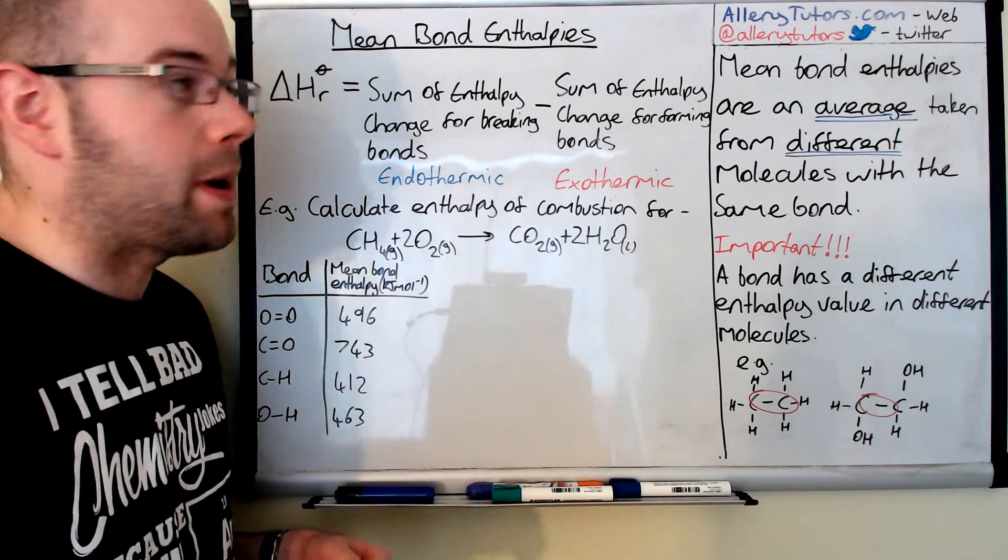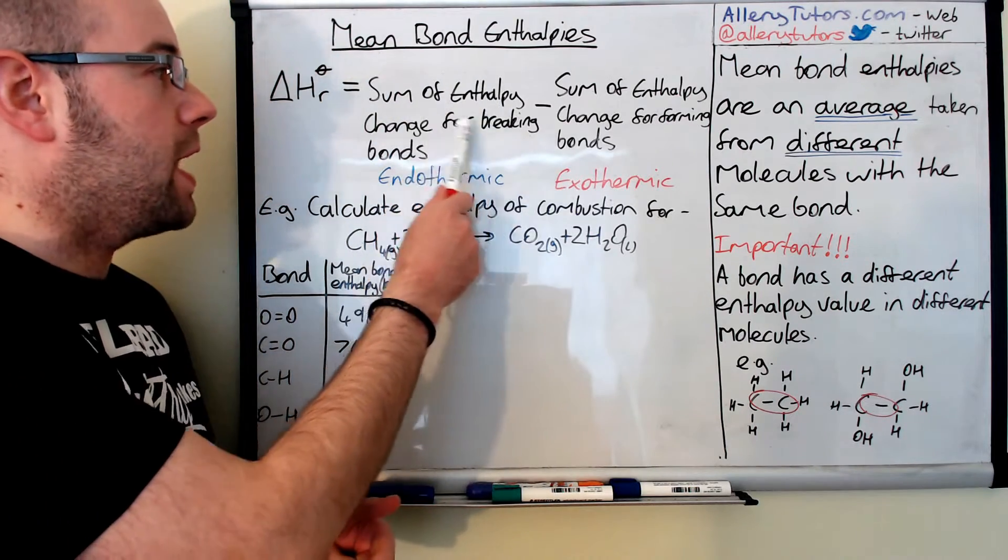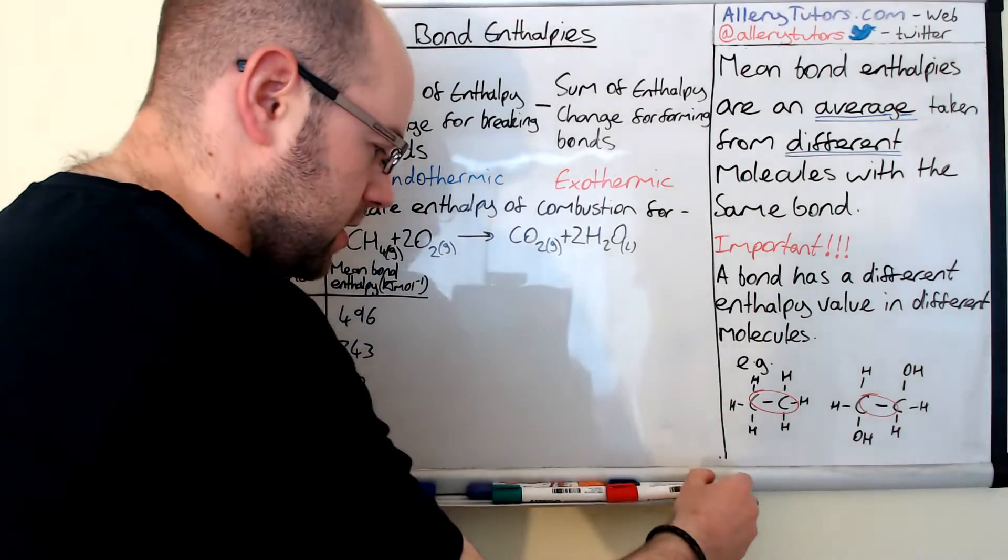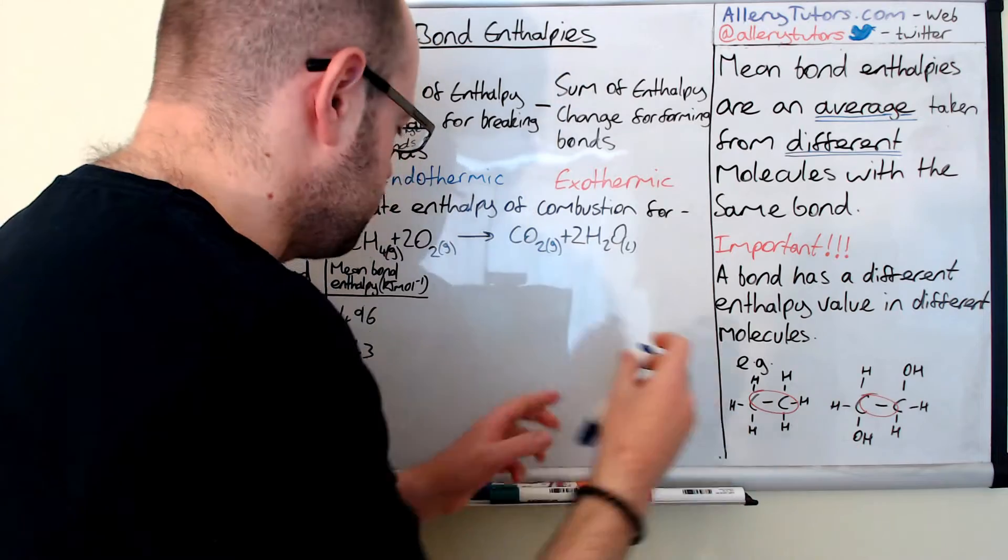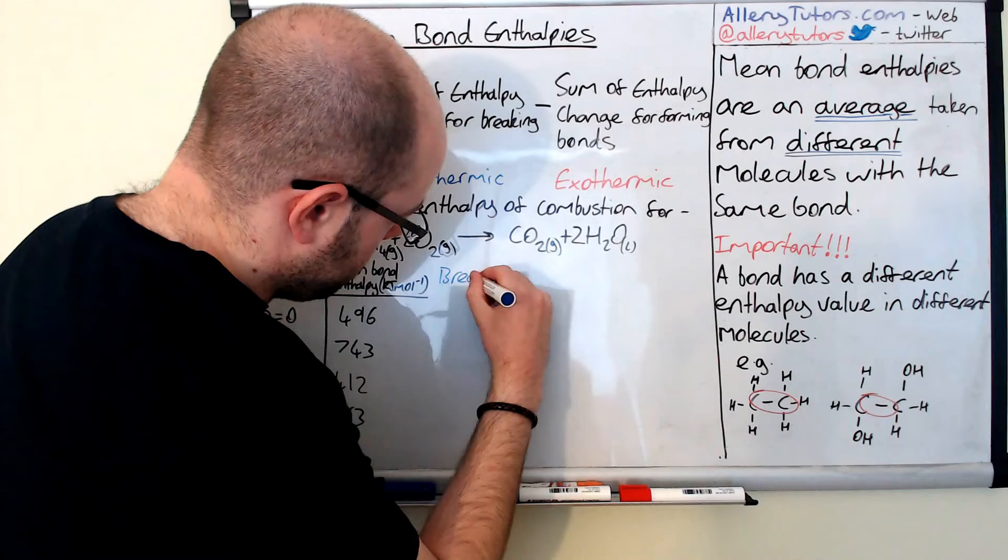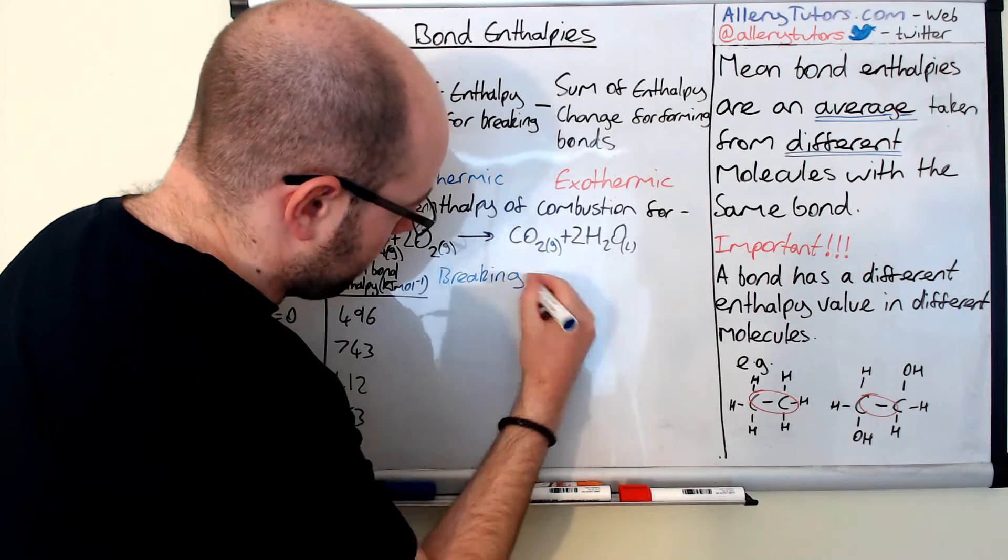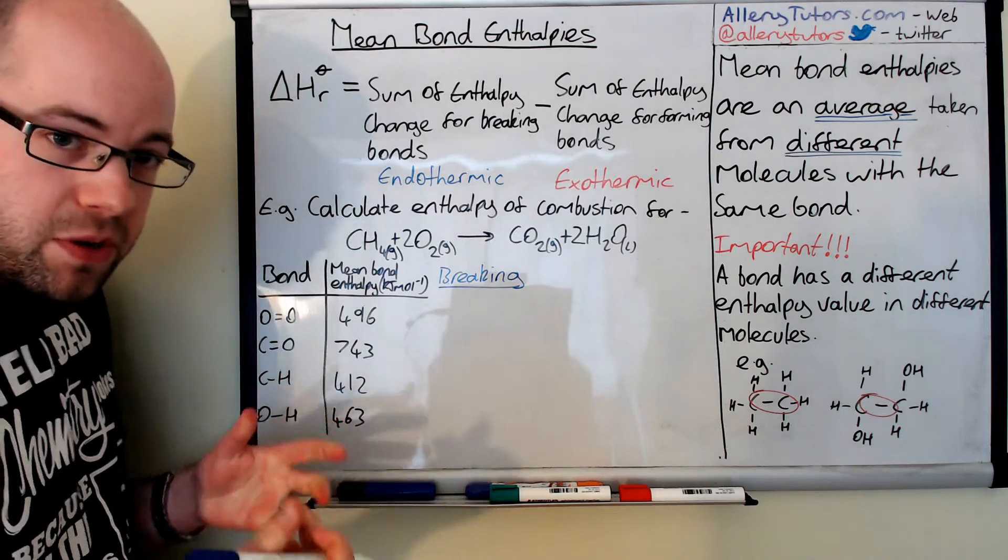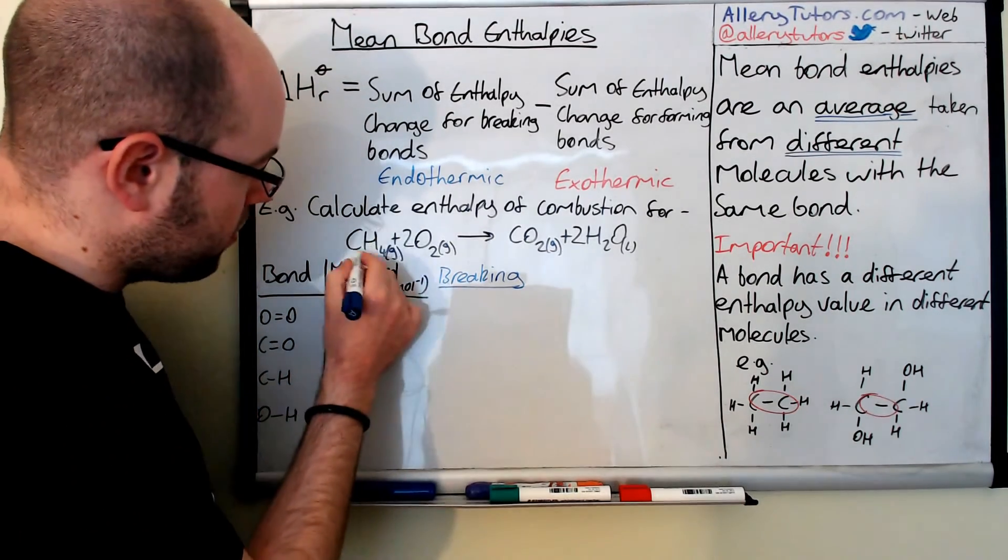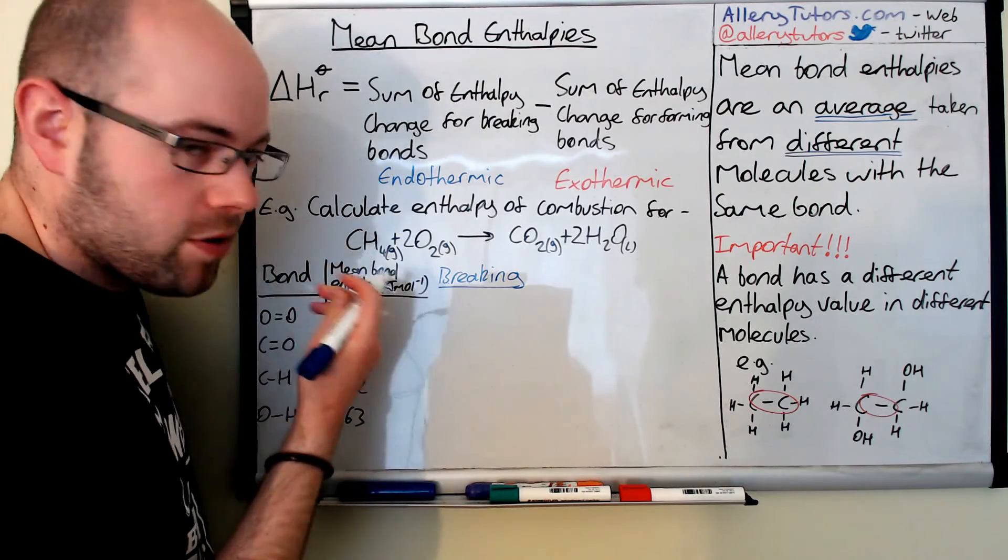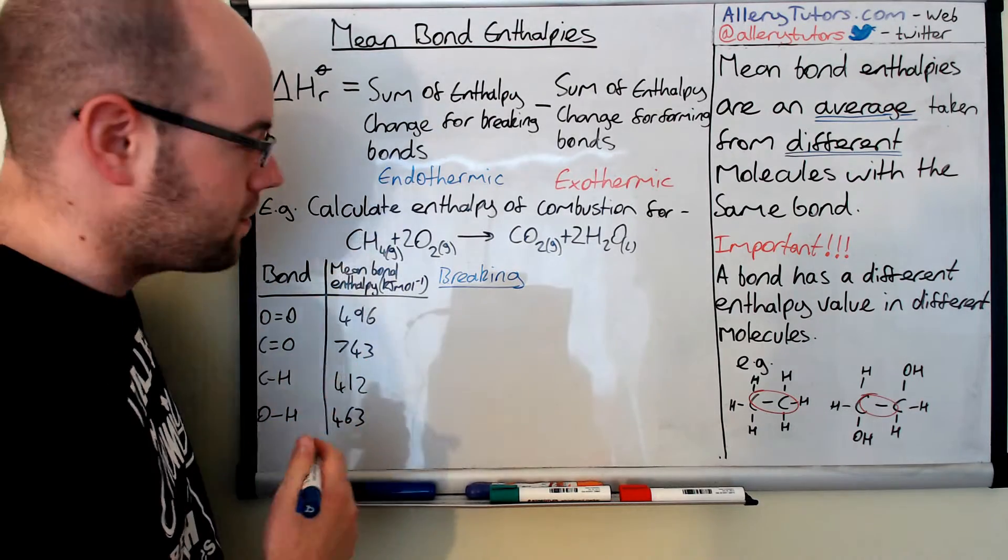We're going to start by working out the sum of the enthalpy change for breaking bonds first. So breaking is endothermic - you're going to put energy in to break these bonds. Sometimes it's a good idea to draw out the displayed formula, and that means showing all the bonds because it makes sure that you've got every single bond there.